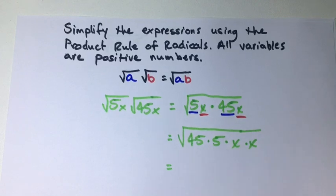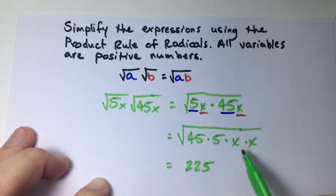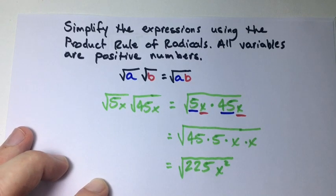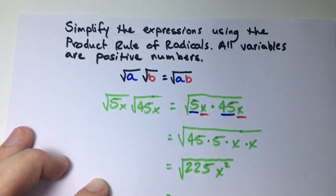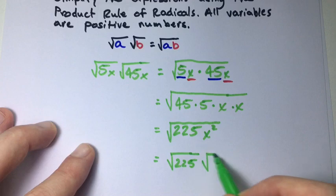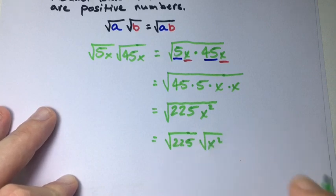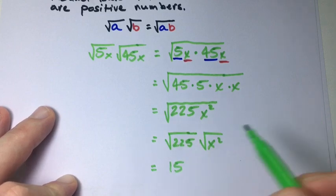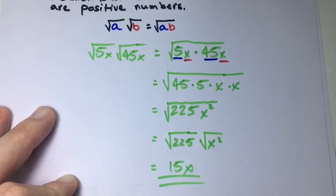Multiplying everything together, 45 times 5 equals 225 and x times x is x squared. Now let's break it back into two different radicals: the square root of 225 times the square root of x squared. We know 225 is a perfect square and equals 15, and the square root of x squared is x. So our final answer is 15x.